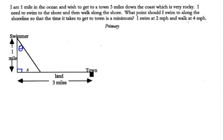Let's identify these distances first. This one distance here, from along the shoreline and the point perpendicular to the location of the swimmer to the town, is three miles. And the distance from the landing place to the town is going to be the quantity three minus x. So that's going to be that distance. Now, we're going to have this swimming distance — what is that distance going to be?